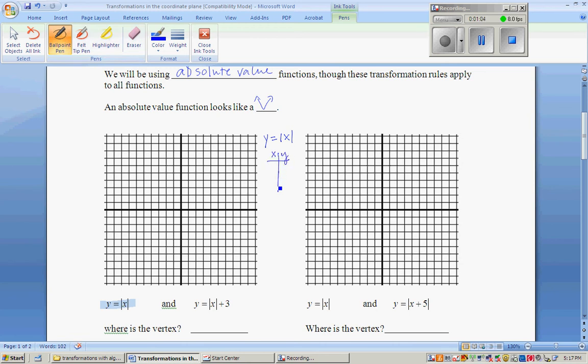So if we chose 0, when X is 0, so is Y. When X is 1, absolute value of 1 is 1. When X is negative 1, the absolute value of negative 1, also 1. So we're going to get those.